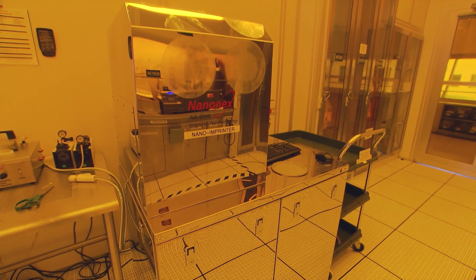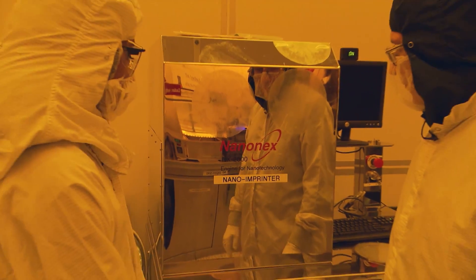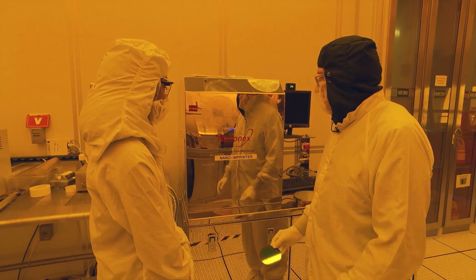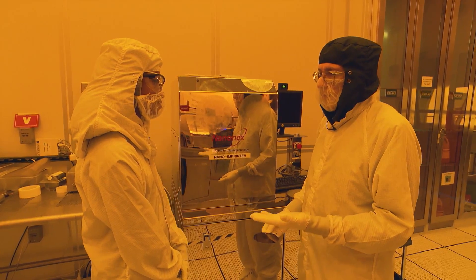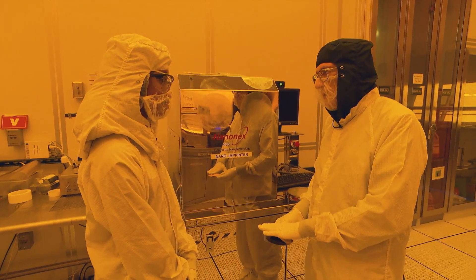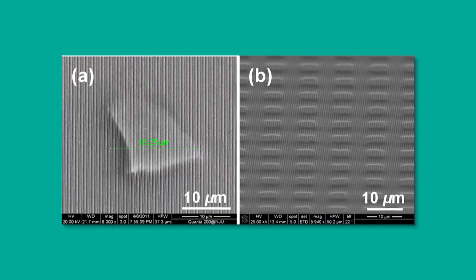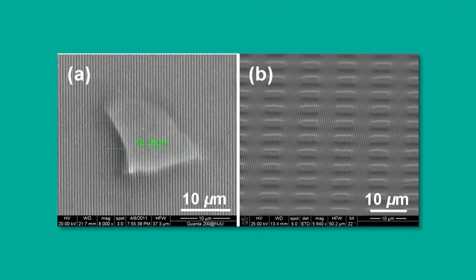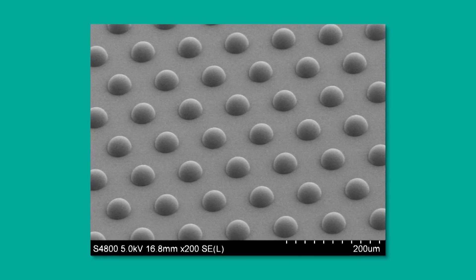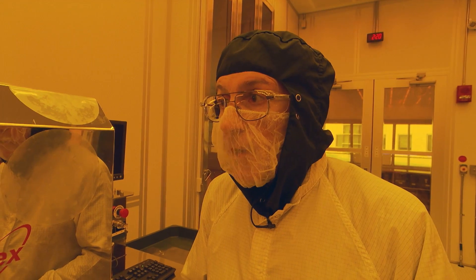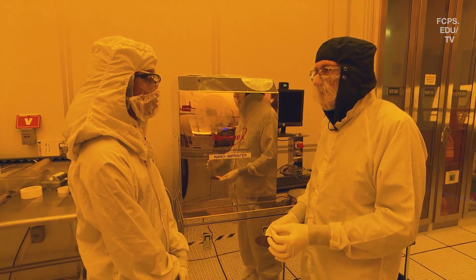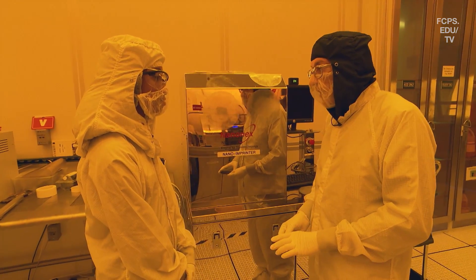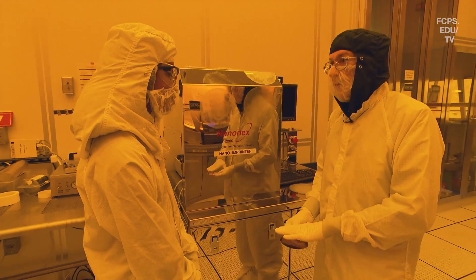Other techniques can also be used to imprint a pattern. The nanoimprinter is basically a stamping tool which is going to transfer a pattern from the mold onto the whole wafer at the nanoscale, creating series of lines, series of interconnected lines, series of pillars, series of holes. Any arbitrary pattern you need to define your circuit can be made on the mold and transferred onto the wafer hundreds of times, down to about 10 nanometers in size. It's very cost effective because the whole wafer is imprinted at one time.